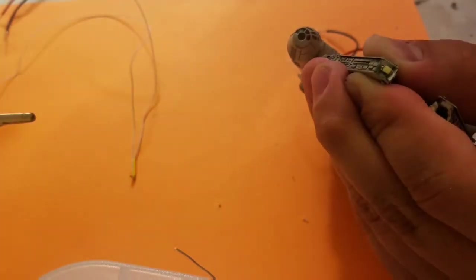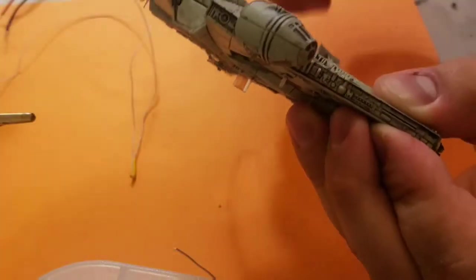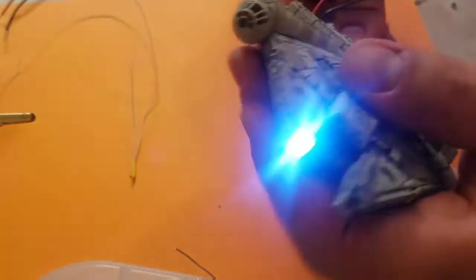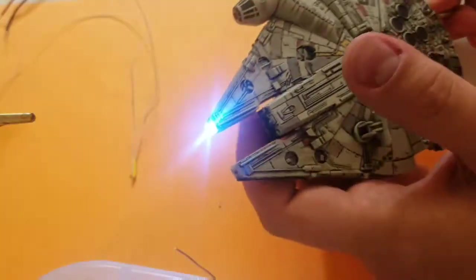With the two halves of the hull pushed together we can make sure that the LED is in place prior to securing it with green stuff. Now I've placed it in place with green stuff, closed the ship and lit it up to make sure that everything looks good.